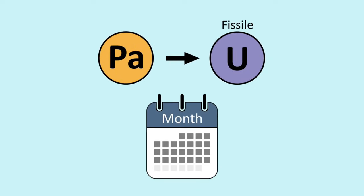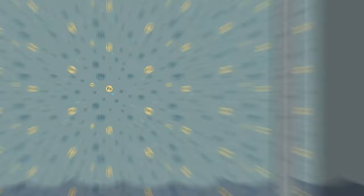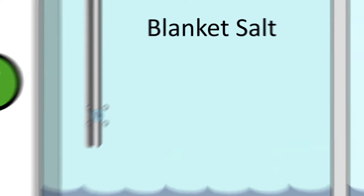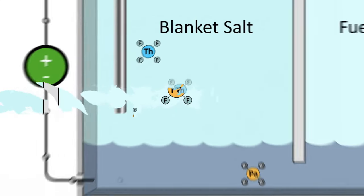The reactor also produces more uranium-233 from the thorium-232, creating a self-sustaining cycle that can last for decades without refueling. The reactor also produces some fission products and some actinides, but much less than a conventional uranium reactor. The fission products can be separated from the fuel and stored safely for a few hundred years until they become harmless. The actinides can be either recycled back into the reactor where they are burned up, or transmuted into other elements such as molybdenum-99, which is used for medical imaging.